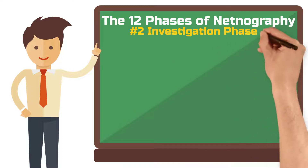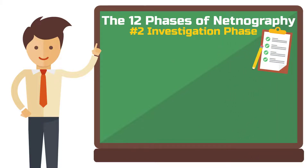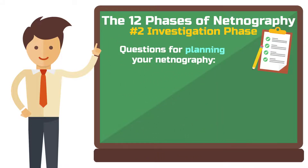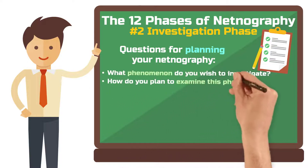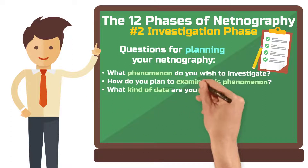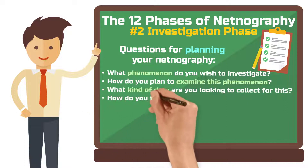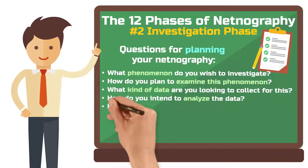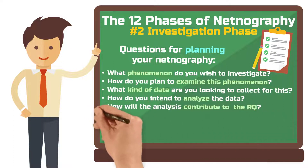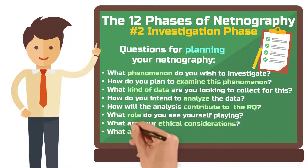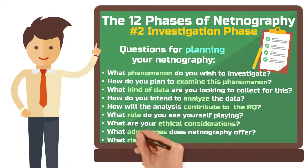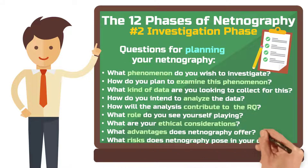Phase 2: The investigation phase. If you're drafting an extended abstract or proposal for your netnography, this is the appropriate section to record answers to the following questions. What phenomenon do you wish to investigate, and what research question can you frame? How do you plan to examine this phenomenon? What kind of data are you looking to collect? How do you intend to analyze the data? How will the analysis contribute to addressing the research question? What role do you see yourself playing during the netnography? Under what ethical considerations are you approaching it? What advantages does netnography offer over other research designs, and what risks does it pose — for example, for the research subjects?